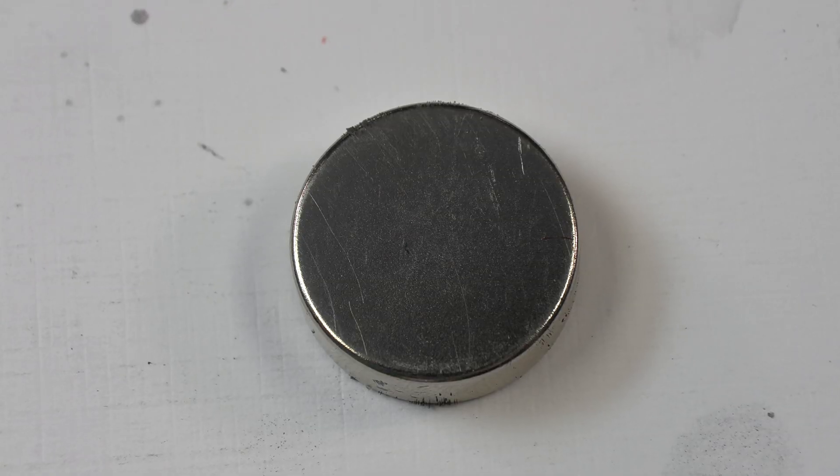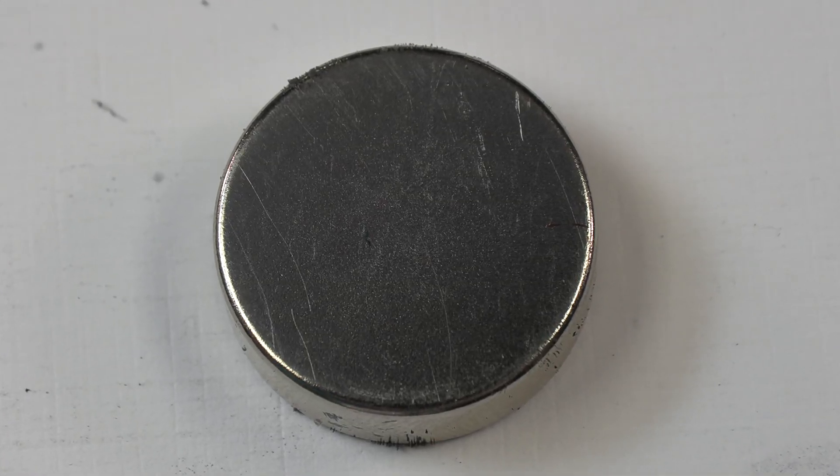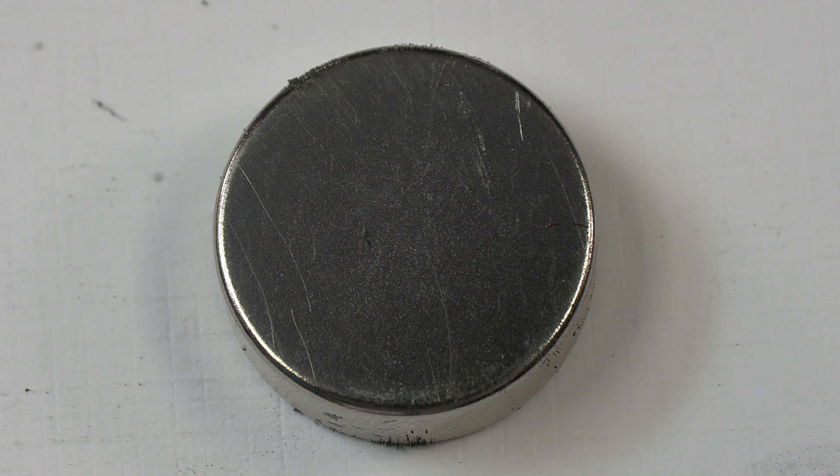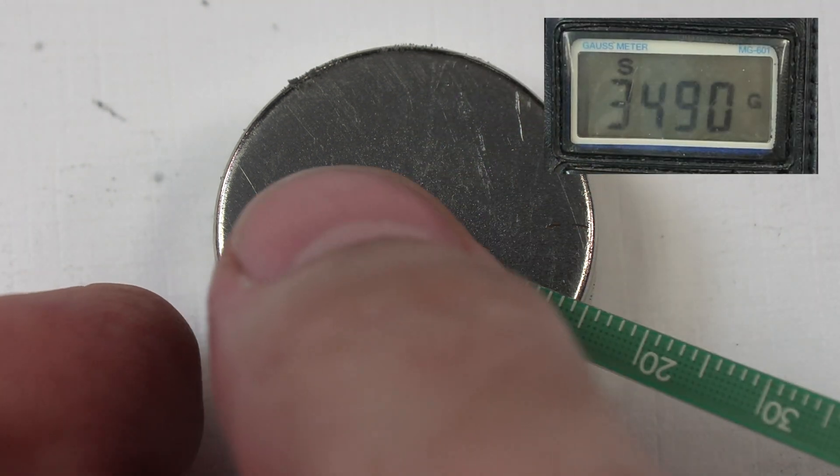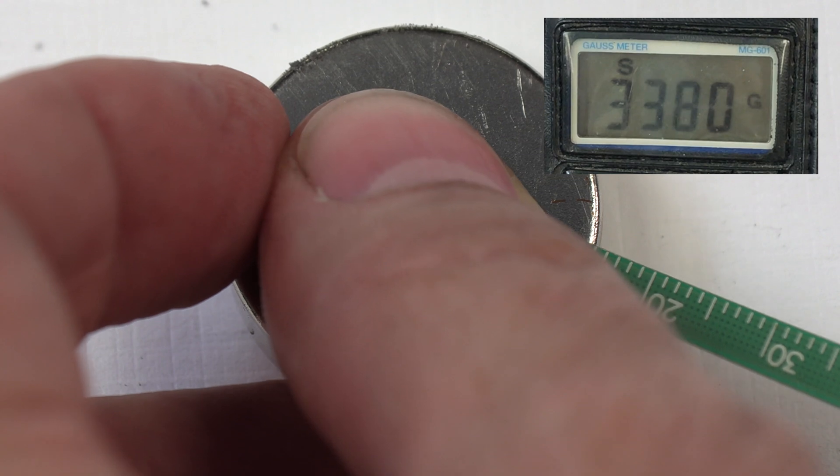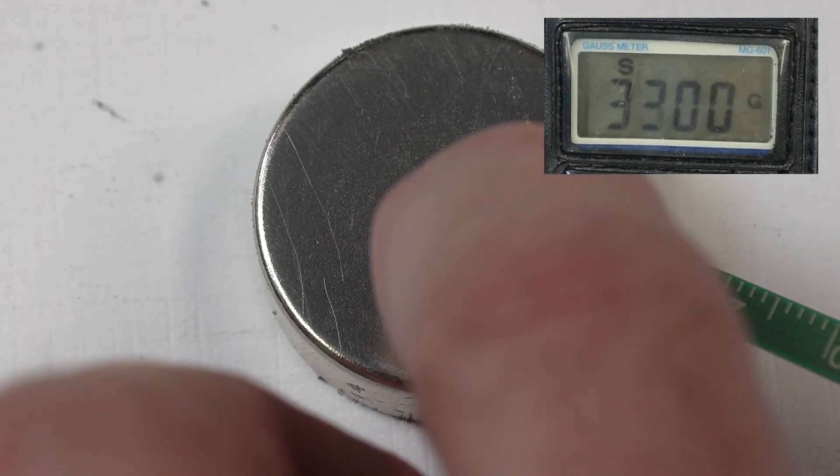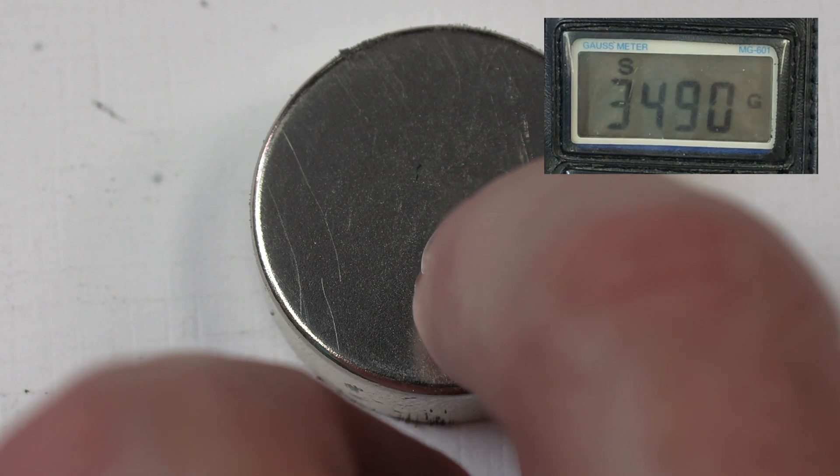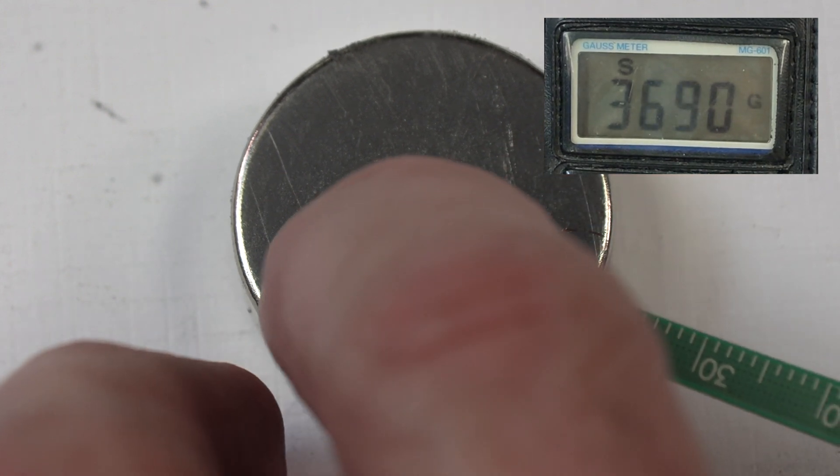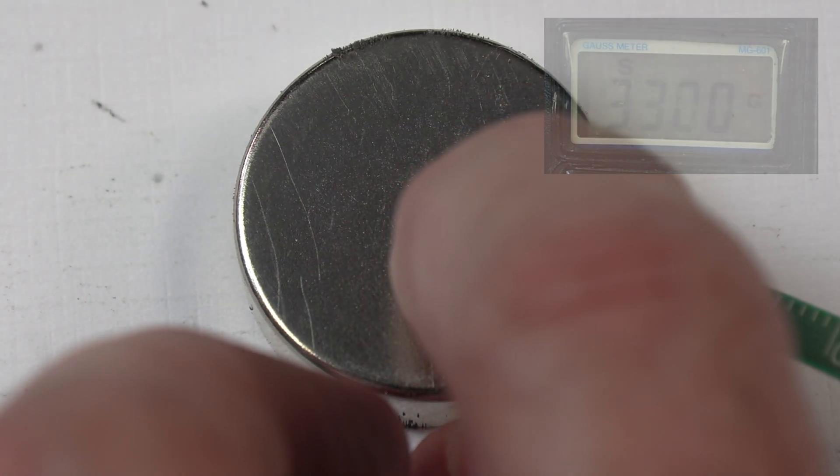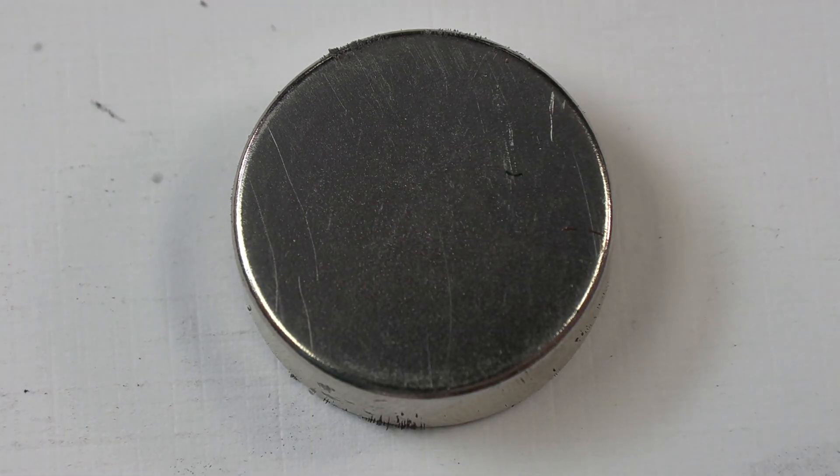Now what we're going to do is run the arc test with another magnet that we know does not have this effect. So the first thing we'll get off of this is the Gauss reading. 3470, 3340, 3360. We're trying to get the Gauss reading on it. 3360, 3400, 3490. So we can see that's the range that this magnet measures.